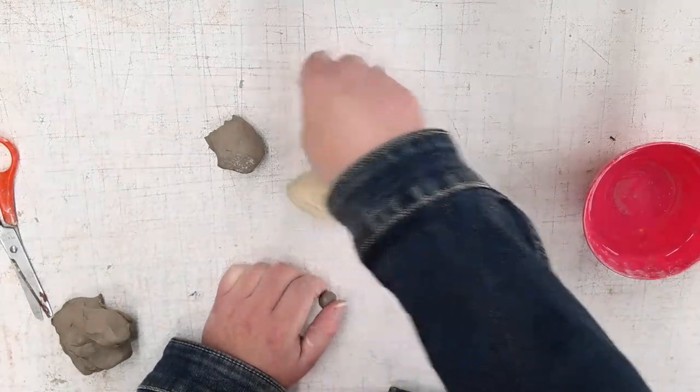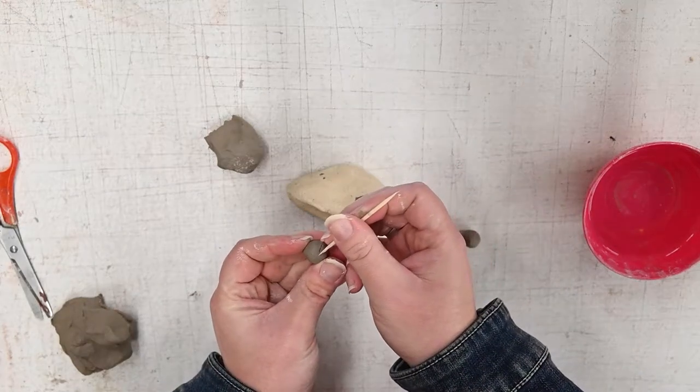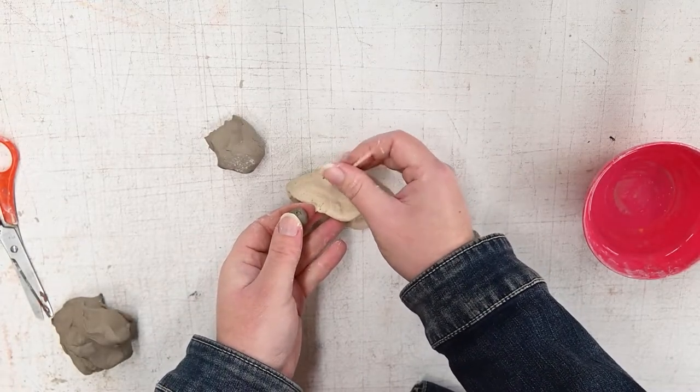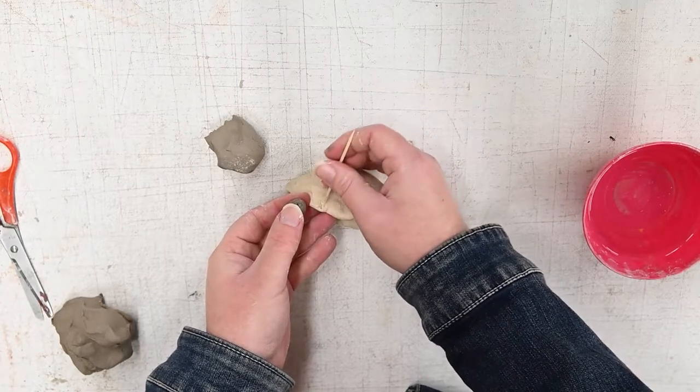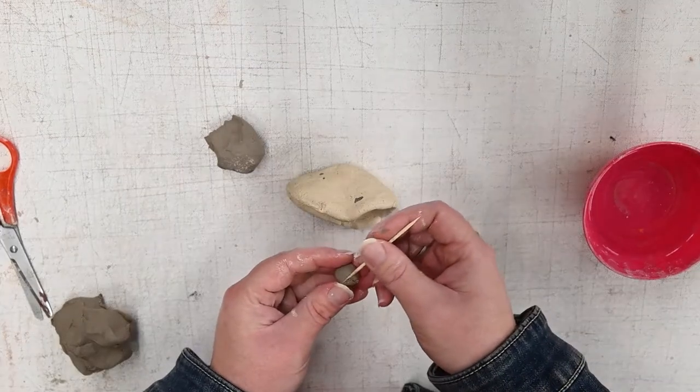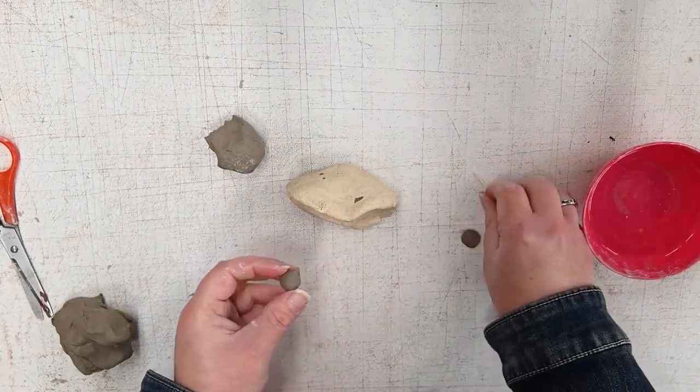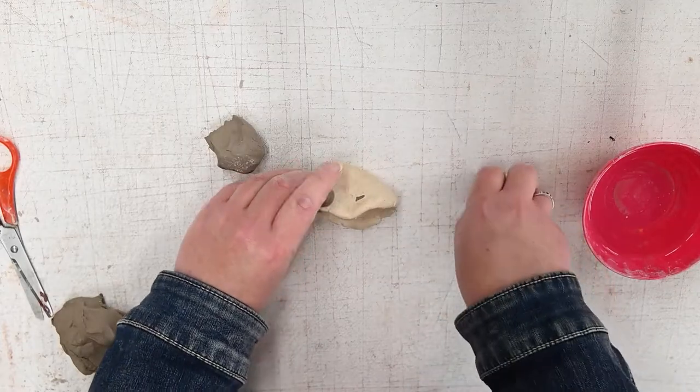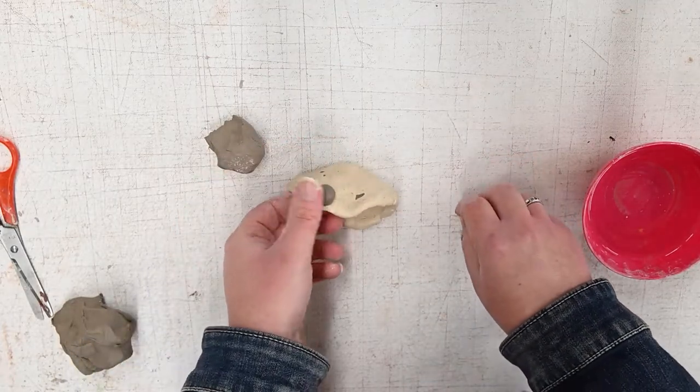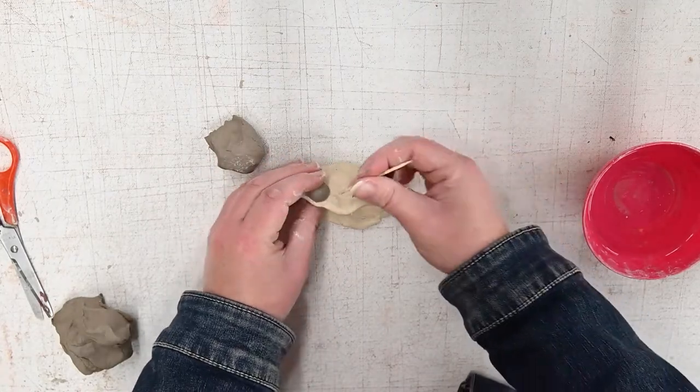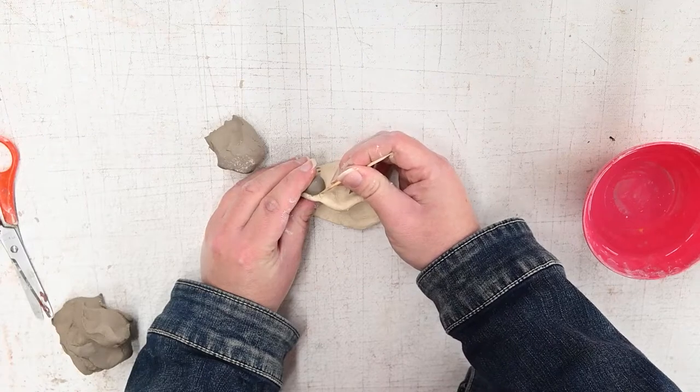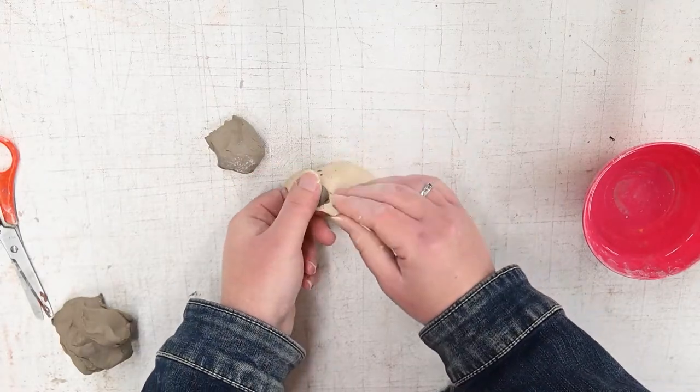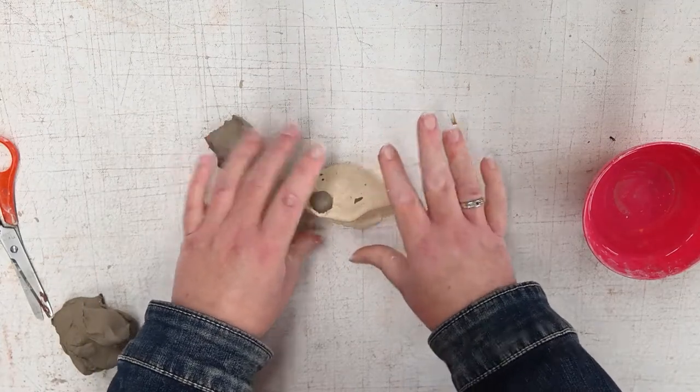To attach our eyes, we're going to take your toothpick and scratch the bottom of your eye where you want it to attach, as well as where you would like to attach it on the base of your monster mouth. And then add a little bit of water. Next, you're going to gently press it down, not too much. And what I like to do to make sure it stays nice and firm is I'll take my toothpick and put a little bit of clay, press a little bit more of the clay down onto the base to ensure that it will stay on after drying.